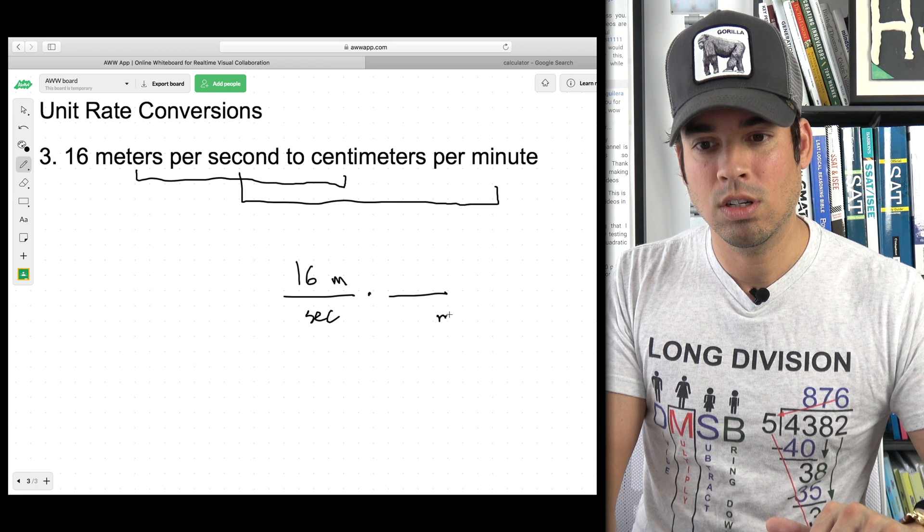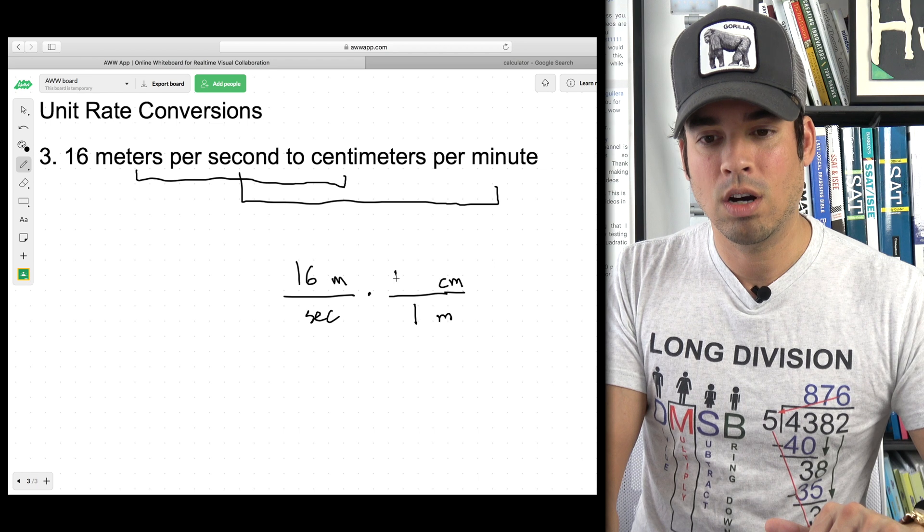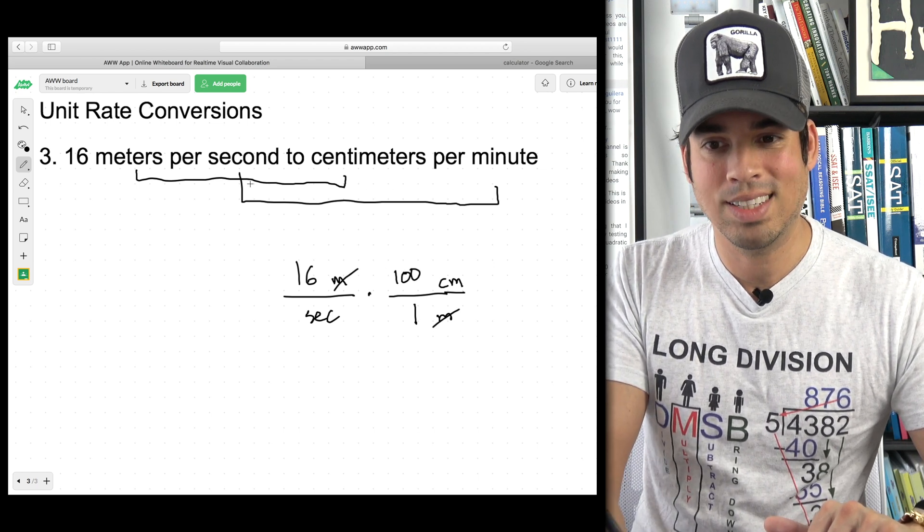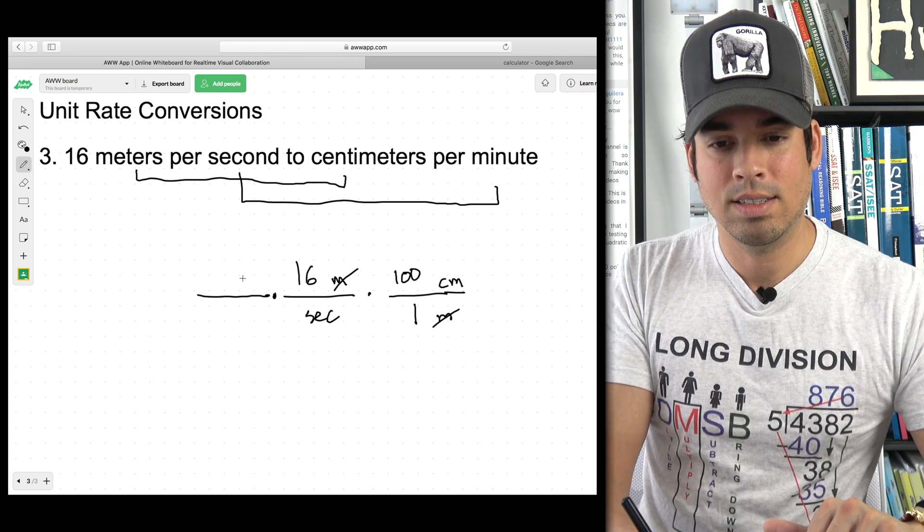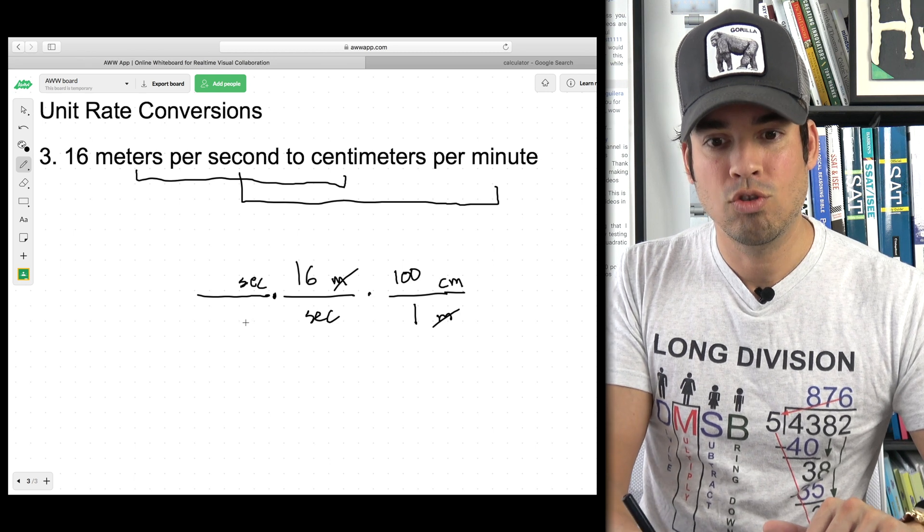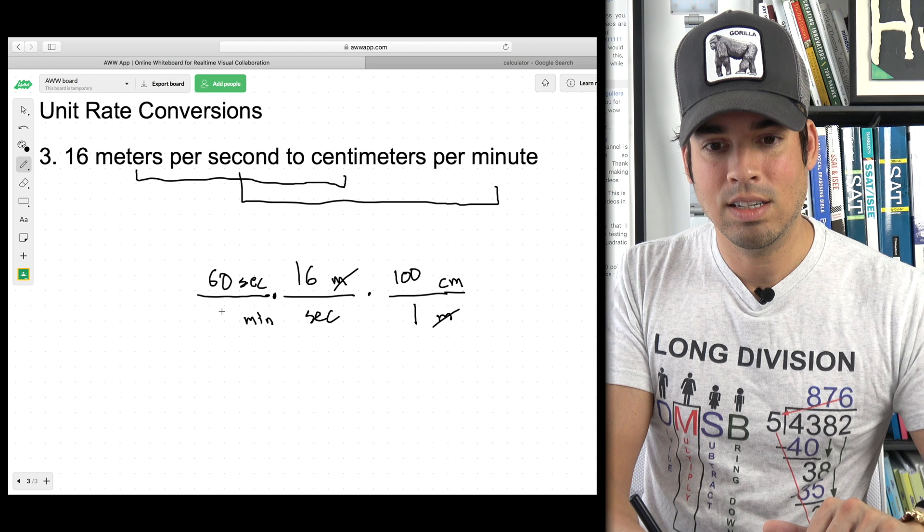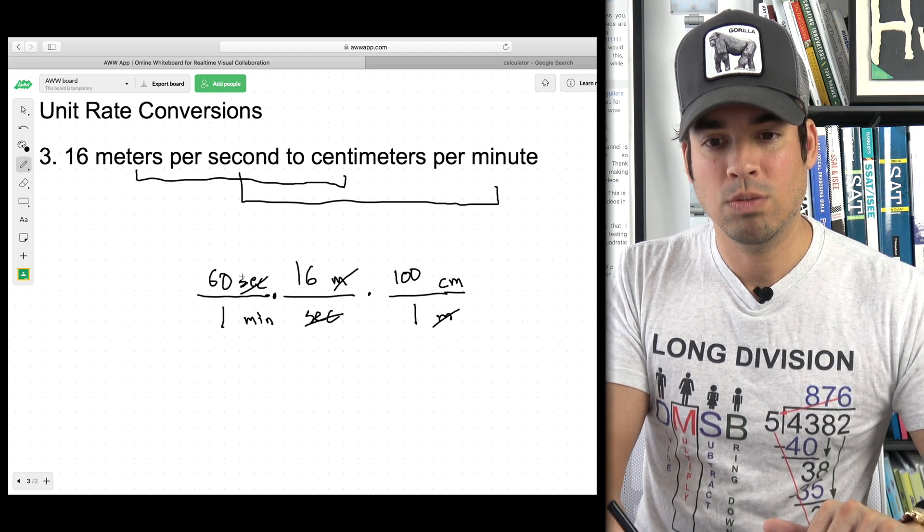So again, the meters is going to go on the bottom. Centimeters is going to go on the top. And I know that one meter equals 100 centimeters. Goodbye meters. And that part is done. Now we need to go seconds to minutes. Let's go to the left. I got seconds on top because we're converting the seconds away to minutes on the bottom. And we know that 60 seconds equals one minute. Goodbye, goodbye.